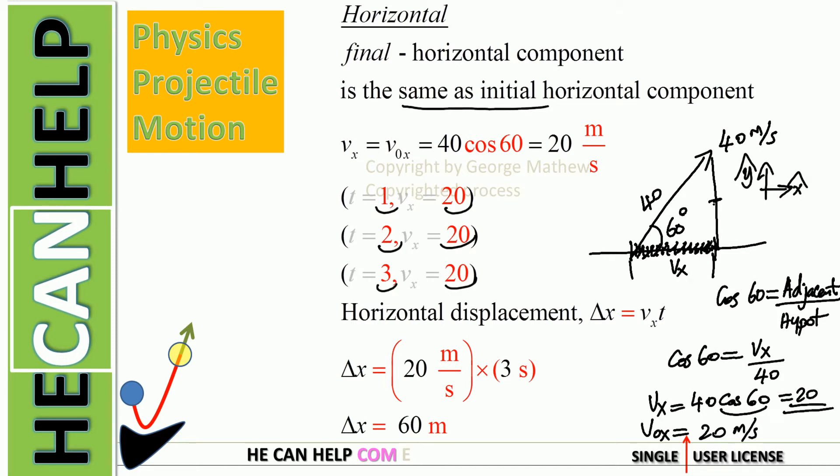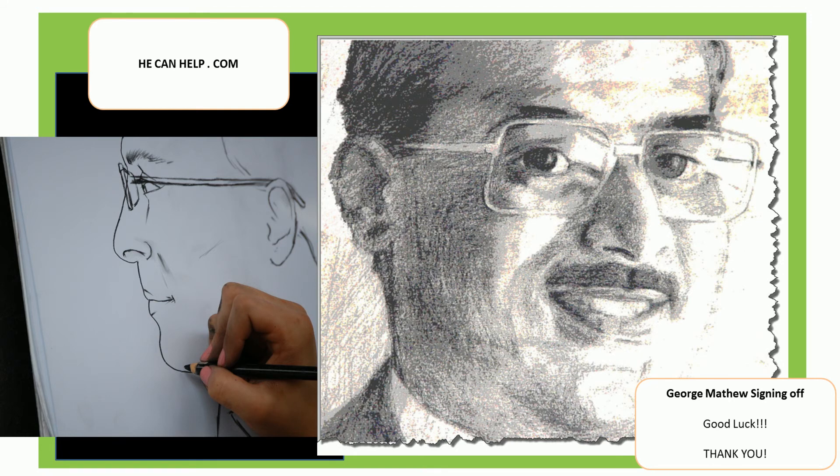Now it's very easy to find the horizontal displacement. Horizontal displacement equals horizontal velocity times time. The horizontal velocity is 20 meters per second, and we have 3 seconds, so we get a total of 60 meters. Our horizontal displacement with respect to the starting point is 60 meters. This is George Matthew, always standing by your side. Good luck.